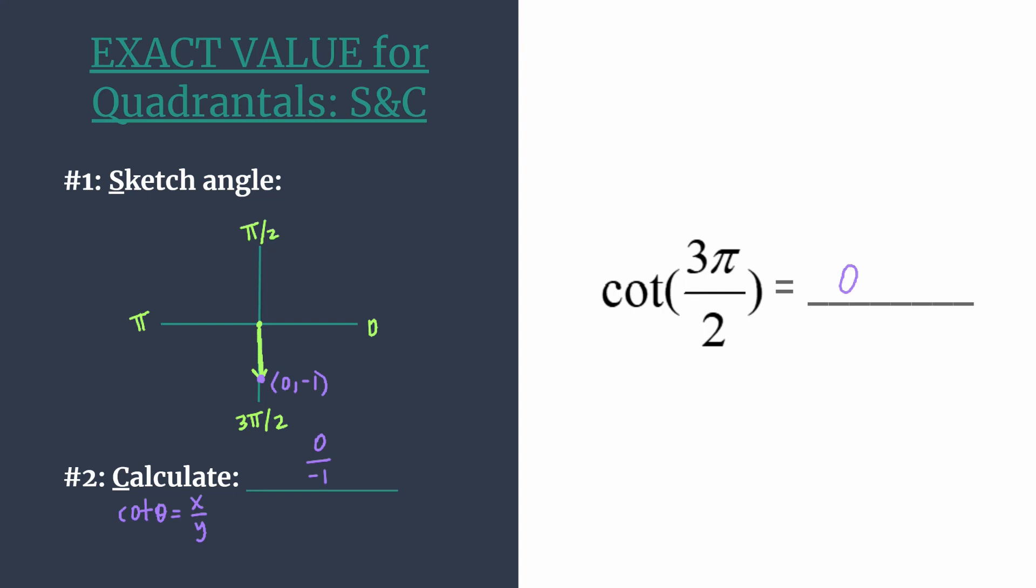All right, so that's all there is to finding exact values using the simplified SARC, S and C, for quadrantals. Be sure to check the video description for links to more worked examples of regular angles and quadrantals, and for help with any other unit circle topic you may need. Thanks for watching.